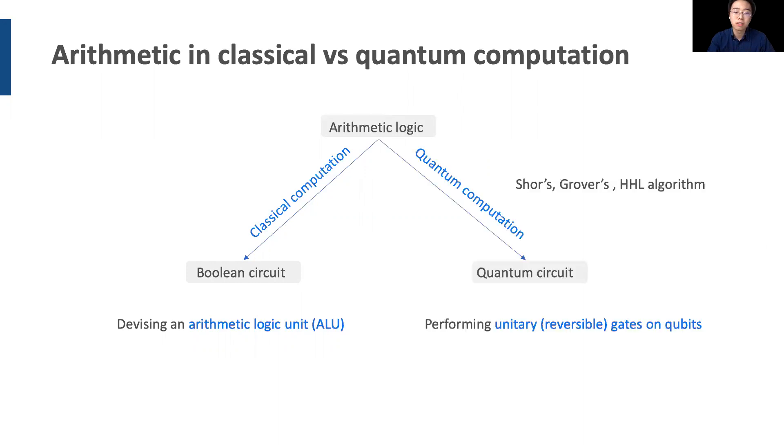Many quantum algorithms involve computing classical arithmetic functions as well. Some examples include Shor's algorithm for factoring, Grover's algorithm for database searching, and the HHL algorithm for solving linear system of equations. They usually have expensive arithmetic steps as subroutines.